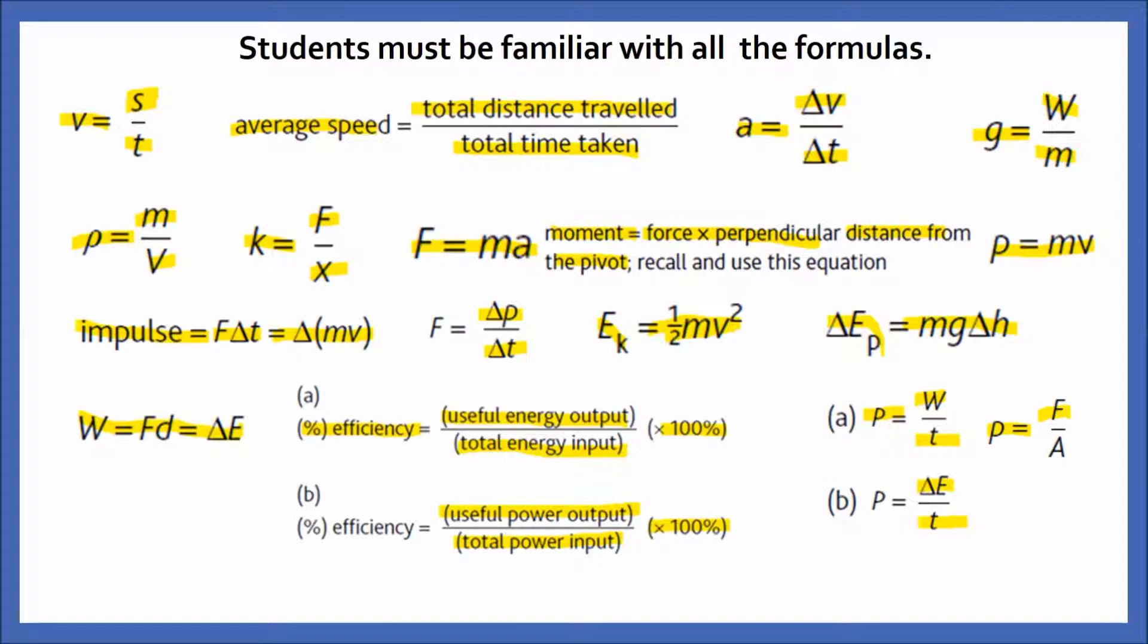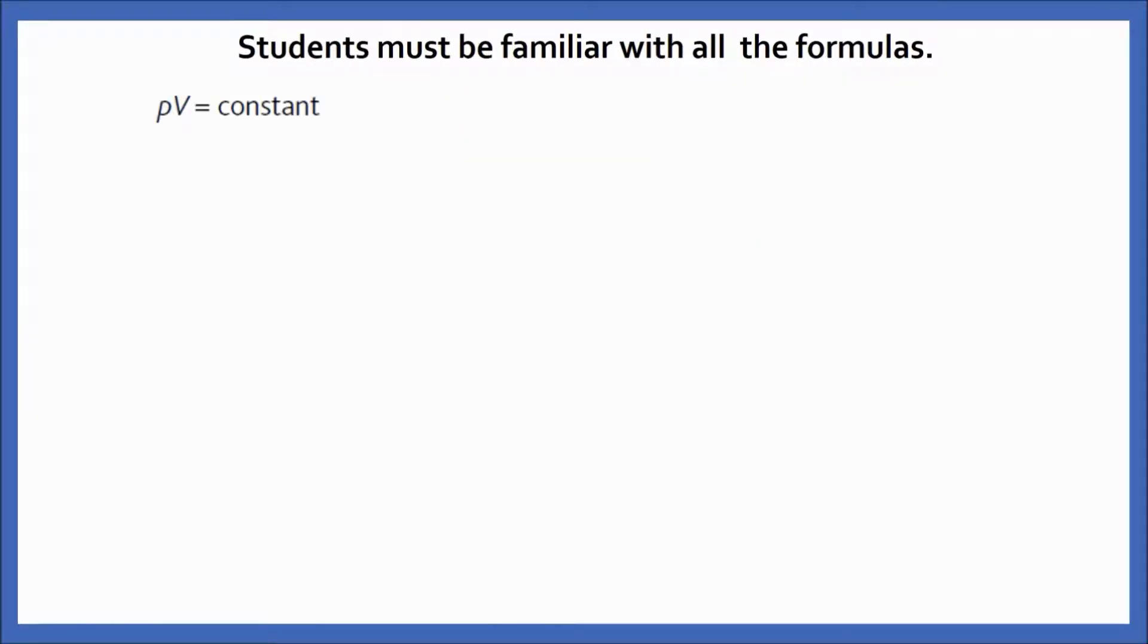Pressure = force / area. Liquid or gas pressure: ΔP = ρgΔh, where ρ means density, g means gravitational field strength, Δh is the height difference. Boyle's law equation: pV = constant, where p is pressure and v is volume. Here is the equation to convert Kelvin scale into Celsius scale: T(K) = θ(°C) + 273. Specific heat capacity formula: c = ΔE/(mΔθ), where Δθ is the temperature difference.